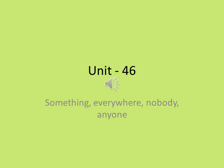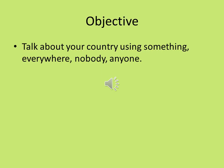Unit 46. Something. Everywhere. Nobody. Anyone. Objective: after this unit, you should be able to talk about your country using something, everywhere, nobody, anyone, and nothing.